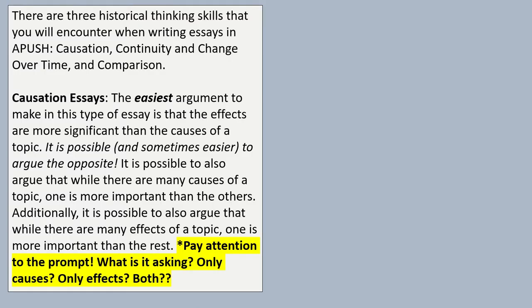So, let's look at some examples. Three types of essays, three thinking skills that you will encounter on the APUSH exam itself. How about we begin with the first one, causation essays. Typically, the easiest argument to make if you're getting a causation essay where it's asking for causes, sometimes effects, sometimes both causes and effects, is usually that the effects of something are more significant than the causes. Like, think about the civil rights movement, for example. Let's hope that the effects of the civil rights movement are more important than what caused it.